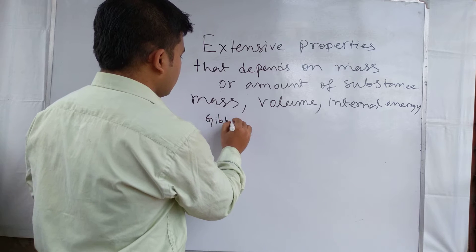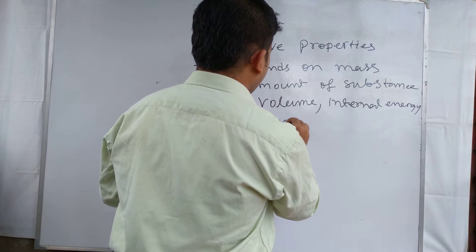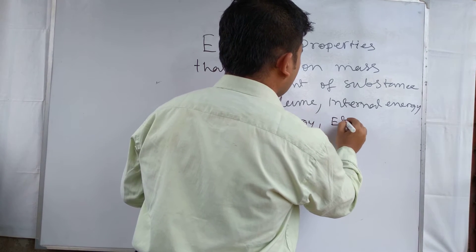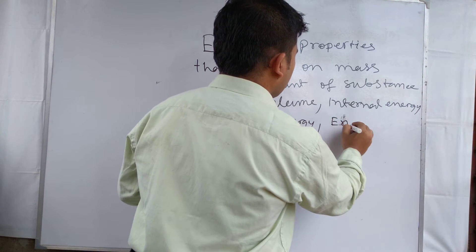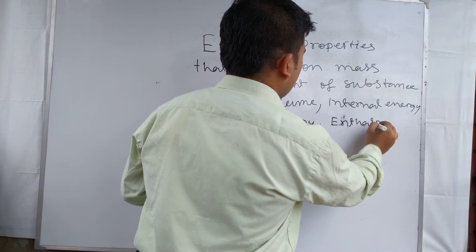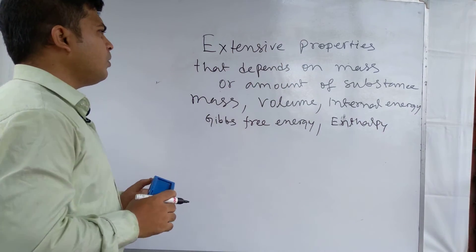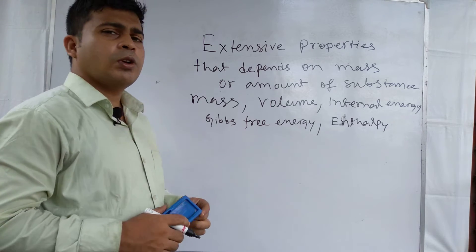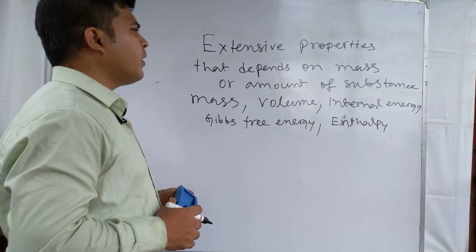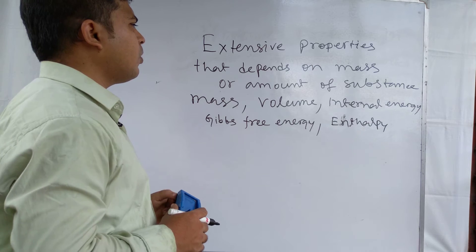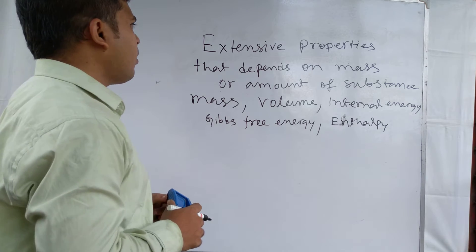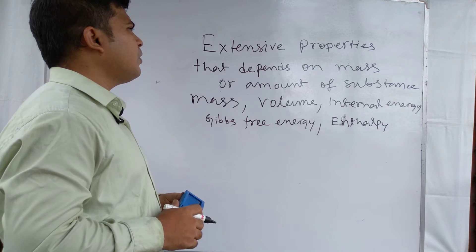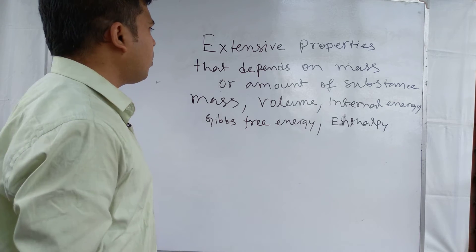Additional examples of extensive properties are Gibbs free energy and enthalpy. These are all called extensive properties because they are amount-dependent or mass-dependent. For this reason, these properties are called extensive properties.